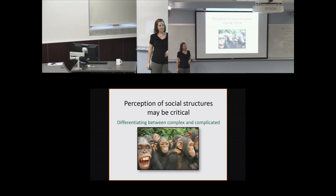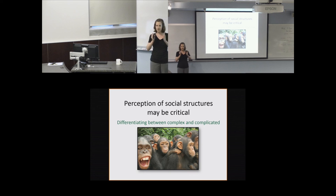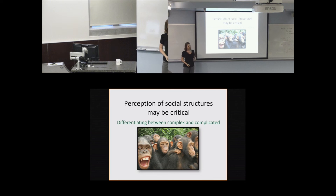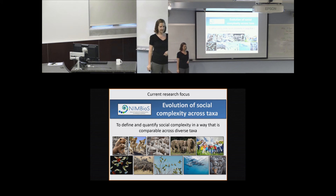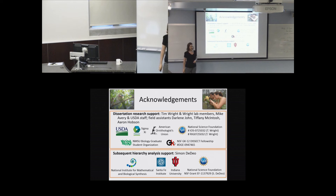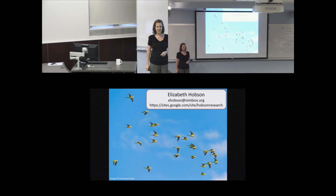What I'm coming to the conclusion about is that individual perception of relationships will be a key thing to focus on for quantifying social complexity. Knowing the differences in how individuals perceive both their direct dyadic relationships and potentially these more emergent social properties can give us potential for differentiating between groups that are structured in very complex ways and groups that are merely complicated. That's what I'll be focusing on for my work here at Nimbus—coming up with a rigorous definition of social complexity that can actually be used to quantify complexity across multiple different taxa to understand how social complexity evolves in a variety of species. I'd like to thank all the people and funding institutions that supported this research.